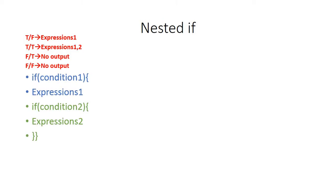Another type of if conditions are called nested if. In nested if, one if condition is enclosed in another if condition. If condition one is true and condition two is false then only expression one will be executed. If both conditions are true then expression one and expression two will both be executed. If the first condition is false then the second condition will not be evaluated, so no expression will be executed.